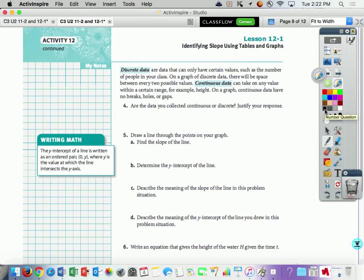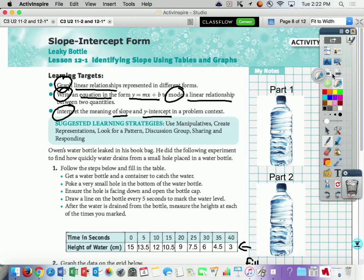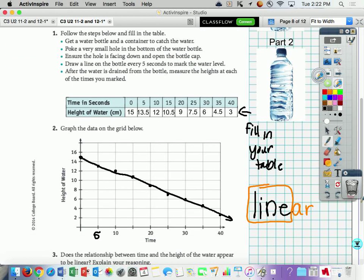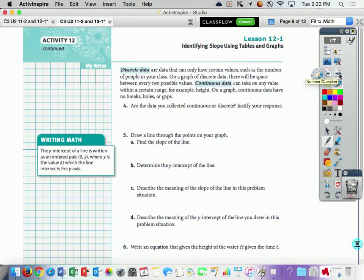All right, discrete data is data that can only have certain values such as the number of people in your class. On a graph of discrete data, there will be space between every two possible values. Continuous data can take on any value within a certain range, for example, height. On a graph, continuous data has no breaks, holes, or gaps. The data, is the data you collected continuous or discrete? Well, because we can connect it, it's continuous.